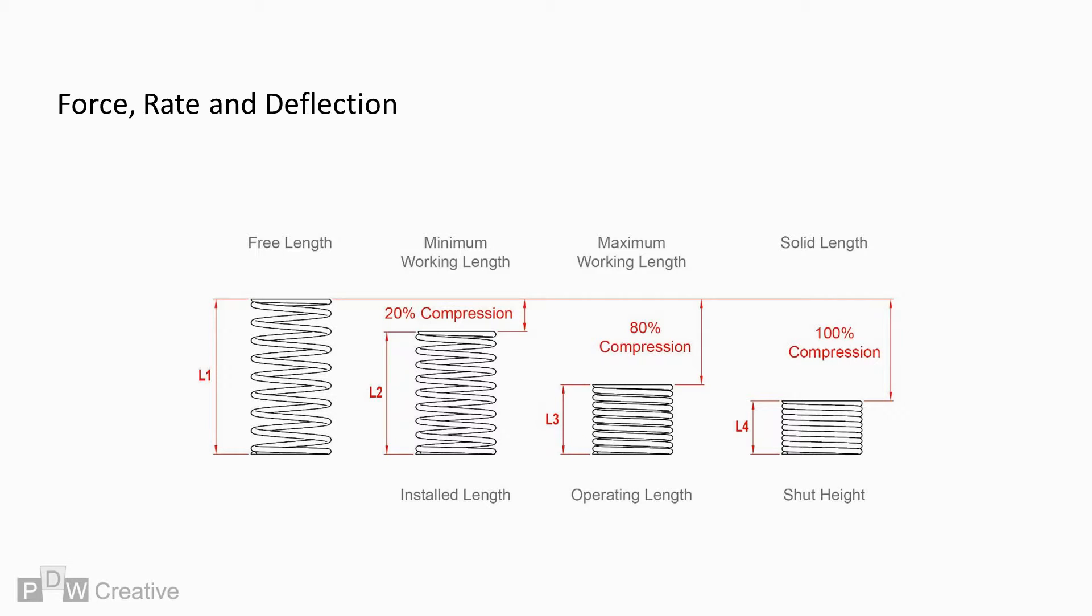So now to our geometry. Free length is the uncompressed starting length. The minimum working length is the length transmitting the lowest calculable load, generally confirmed as 20% compression or deflection in many international standards. The max working length is the length transmitting the highest calculated load.